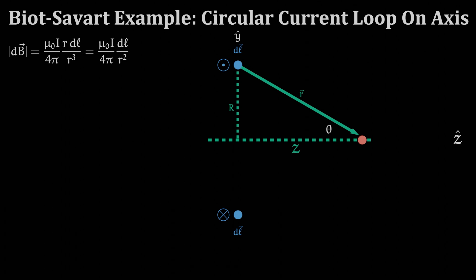Following the cross product between vector dl and vector r or using a right hand rule we can see that the infinitesimal B field vector dB at our point of interest will be pointing in this direction.